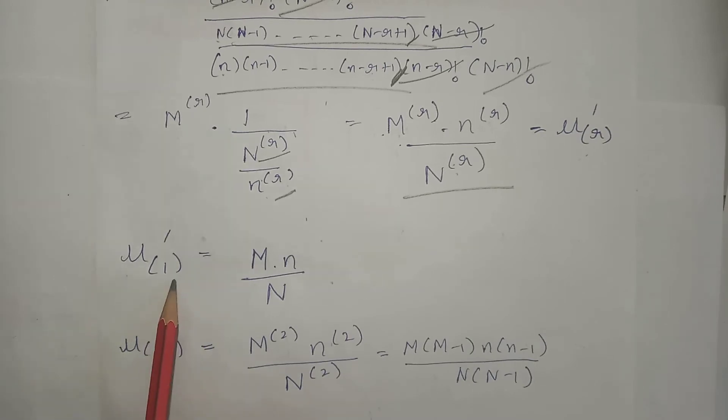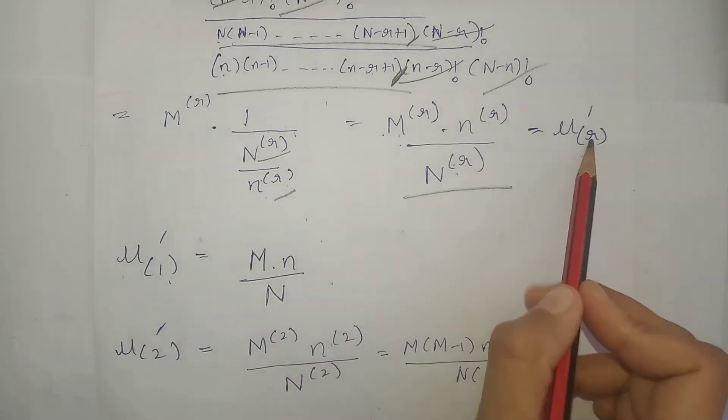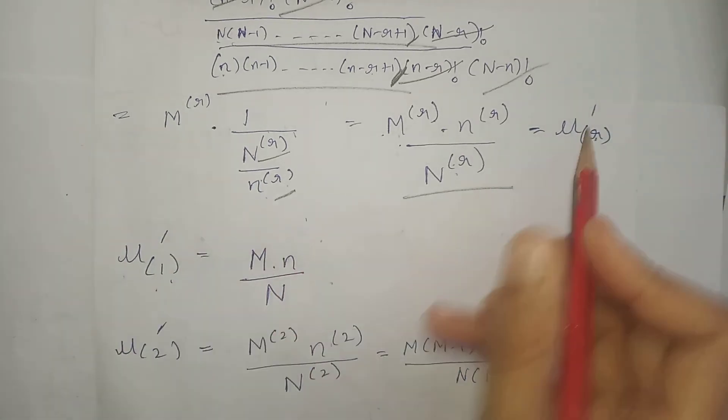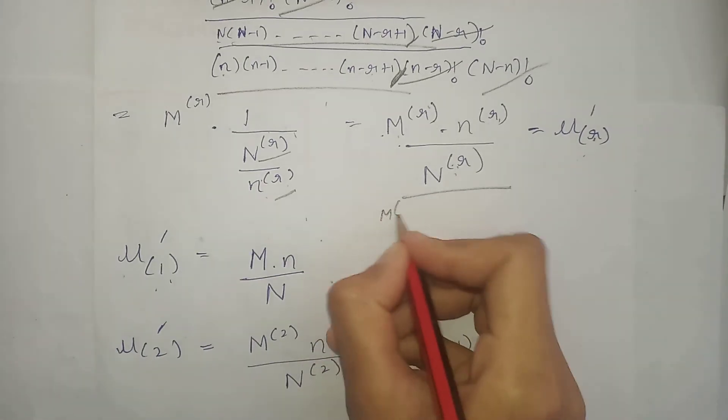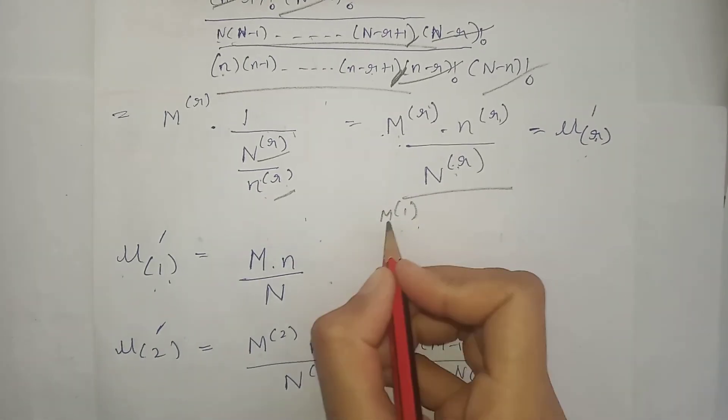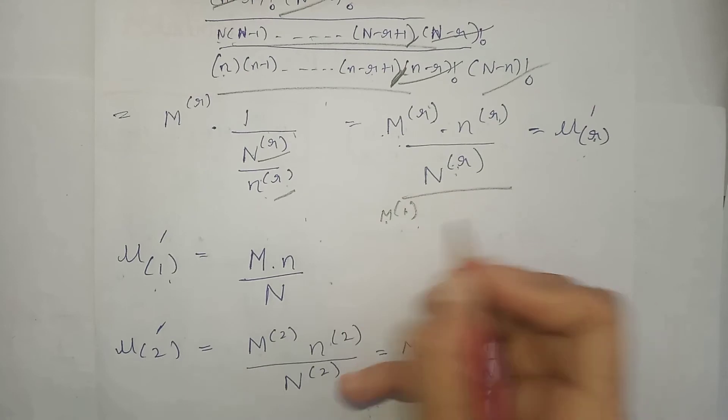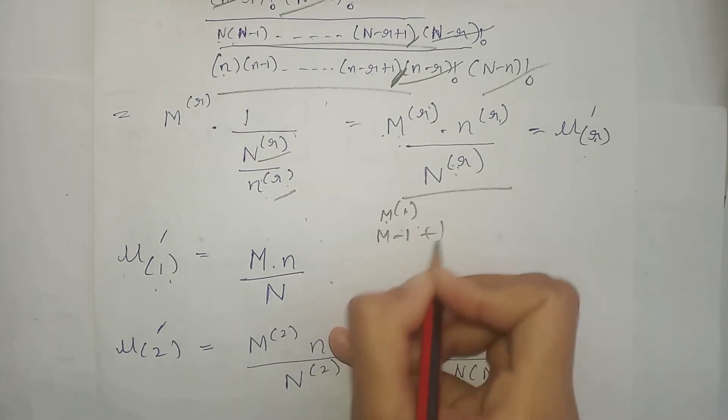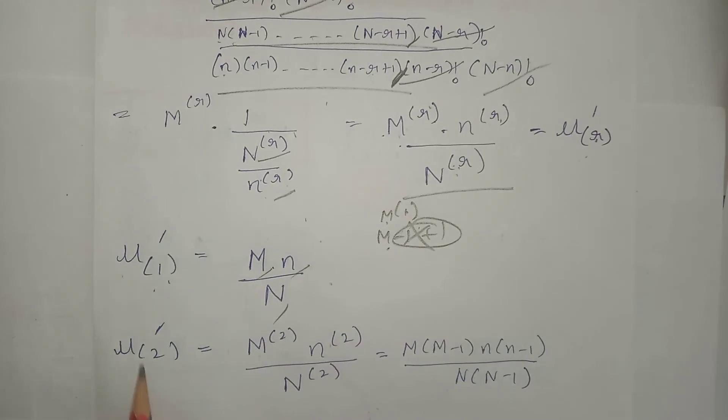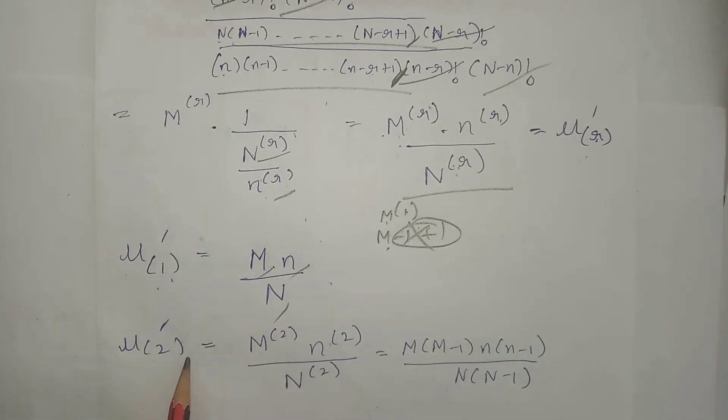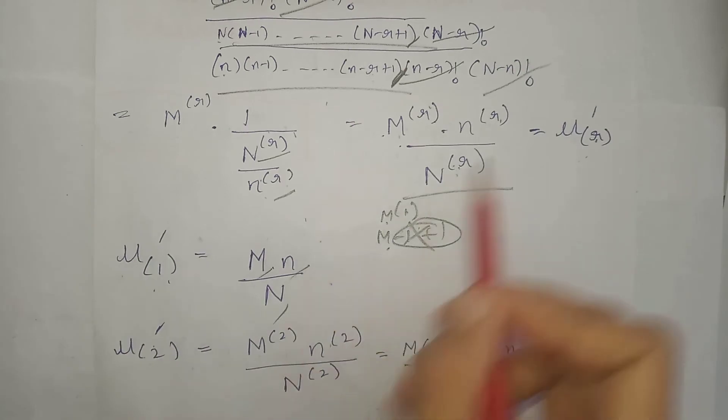Now using this we will find out all the other moments. So firstly we will find out the first moment, first factorial moment about origin of hypergeometric distribution. That is, you put one in place of r here, put one in place of r here. See what our terms become: M raised to power one - how will we expand this? This minus this plus one, this minus this plus one, that is only M remains at the back, that's why this came. So this is the first factorial moment.